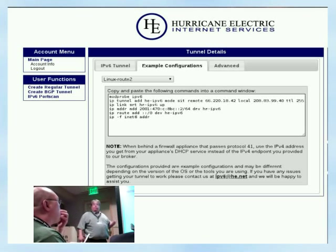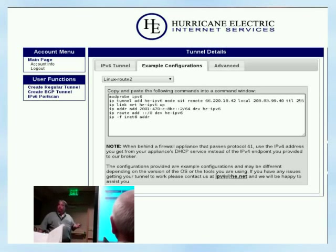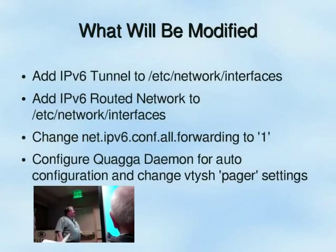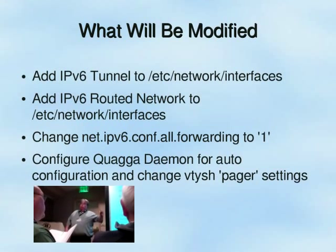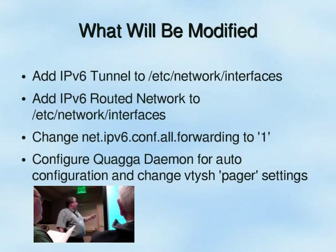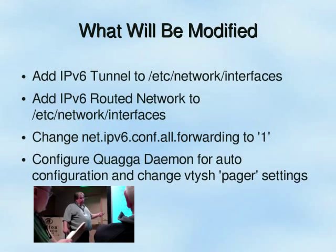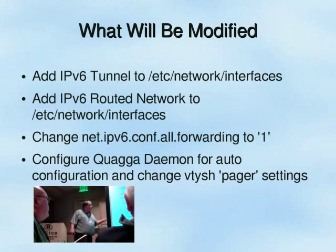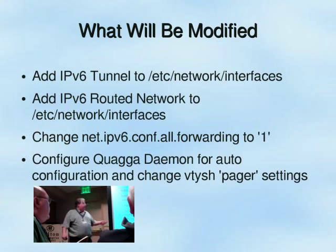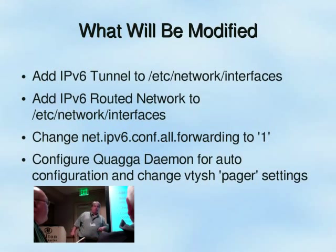We'll eventually want the system to auto-boot with the tunnel and everything else automatically. Here's what we're going to modify on our firewall: add the IPv6 tunnel to our /etc/network/interfaces file, add the IPv6 routing network to the inside interface in that file, change our IPv6 routing setting in sysctl.conf, and install and configure the Quagga daemon for auto-configuration.